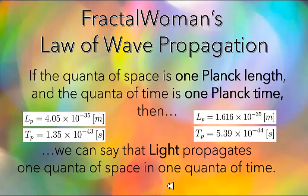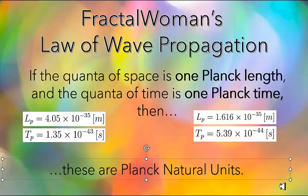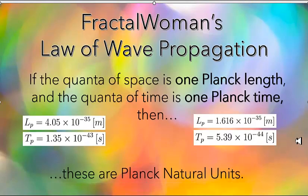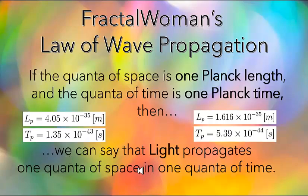This is the true meaning of what we call the natural units — specifically, the Planck natural units. When you hear the term Planck natural units, why are they called natural units? It's because we can say that light propagates one Planck length in one Planck time. This makes them a very natural system to use as units, because 'unit' means one. This is why they use the Planck units — when you use Planck units, you can reduce all the units to one quantity.